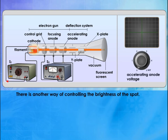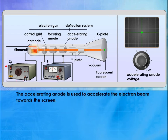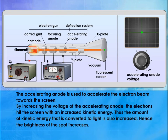There is another way of controlling the brightness of the spot. The accelerating anode is used to accelerate the electron beam towards the screen. By increasing the voltage of the accelerating anode, the electrons hit the screen with increased kinetic energy. Thus, the amount of kinetic energy that is converted to light is also increased. Hence, the brightness of the spot increases.